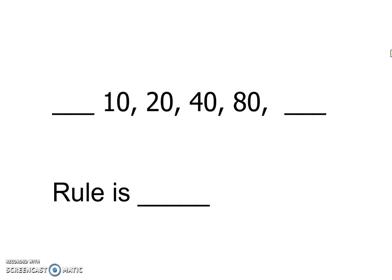Let's check this one out. Our number is getting bigger. So we're either adding or multiplying. Can I take 10 times something to get to 20? Oh, I can. Times 2. So let's double check it just to make sure. If you took 20 times 2, does that give you 40? Yep. And 40 times 2 is 80.